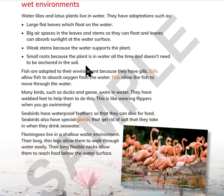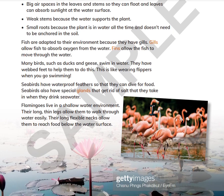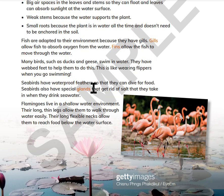Fish are adapted to their environment because they have gills. Gills allow fish to absorb oxygen from the water. Fins allow the fish to move through the water. Many birds, such as ducks and geese, swim in water. They have webbed feet to help them do this — like wearing flippers when you go swimming. Seabirds have waterproof feathers so that they can dive for food. Seabirds also have special glands that get rid of salt that they take in when they drink seawater.